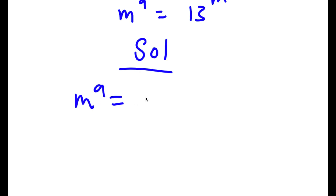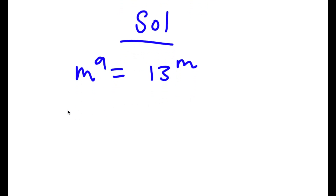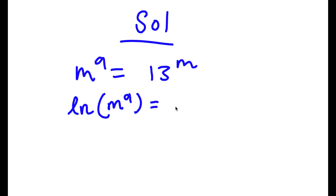We're starting with m to the power of 9 is equal to 13 to the power of m. What I'm going to do is take the ln on both sides. So now I have ln of m to the power of 9, and this is equal to ln of 13 to the power of m.